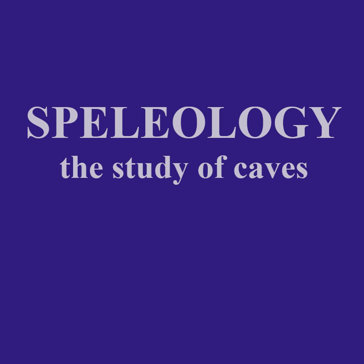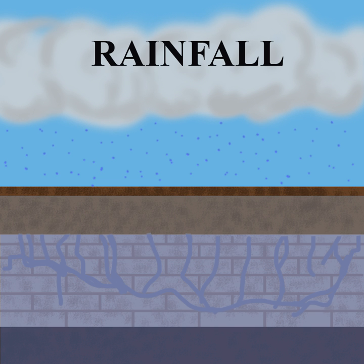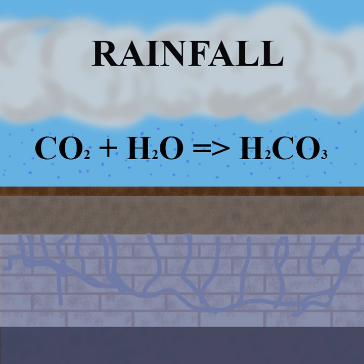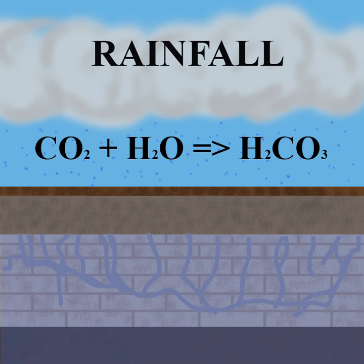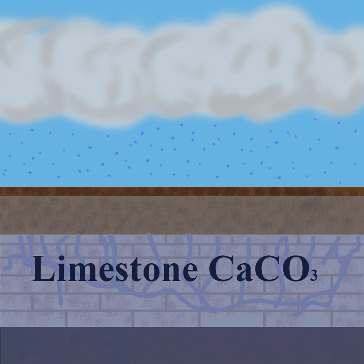When rainwater seeps into the ground, carbon dioxide from the soil as well as other elemental compounds are dissolved by the water, making it acidic. Another key ingredient in the formation of caves is limestone, a sedimentary body composed of calcium carbonate.